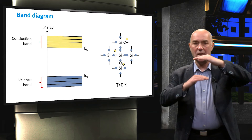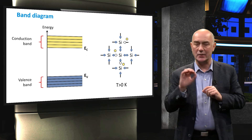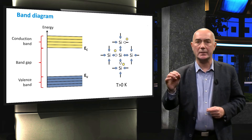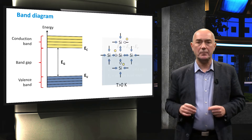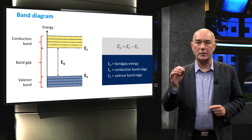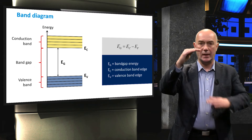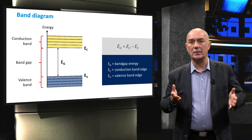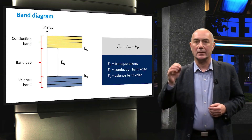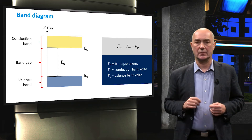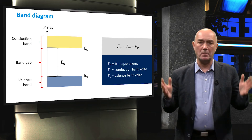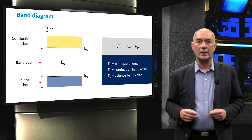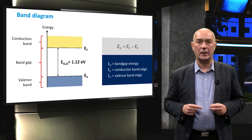Between the band edges is a range of energy levels that the electrons cannot occupy. This range of forbidden energy levels is known as the band gap. The band gap energy, indicated by EG, is therefore equal to the difference between the conduction band edge and the valence band edge. Since in photovoltaics we are mostly interested in the energy of band edges, the levels in the bands are usually removed. The band gap energy is a defining property of a semiconductor material; for instance, the band gap energy of silicon at room temperature is equal to 1.12 electron volts.